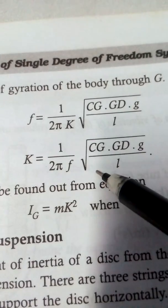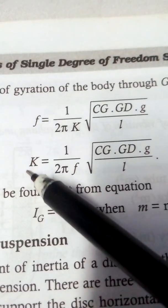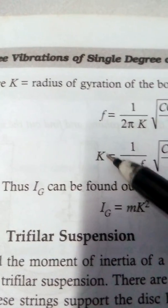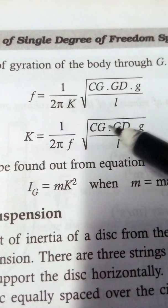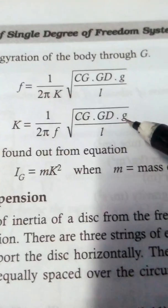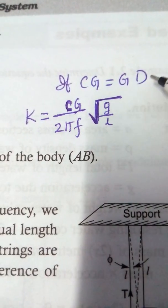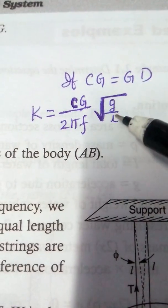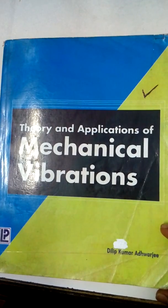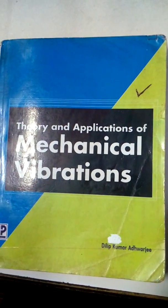If the bar is uniform, then CG equals GD. So K equals CG / (2π·f) times the square root of CG / L. Here K is the radius of gyration of the body about G. This is the reference book I have used. Thank you.